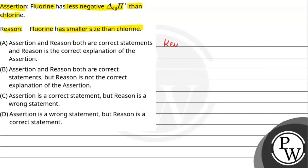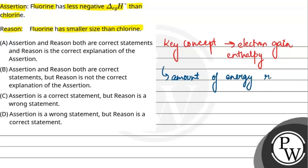We need to know the key concept of this question is electron gain enthalpy. Electron gain enthalpy is the amount of energy released when an atom accepts an electron.